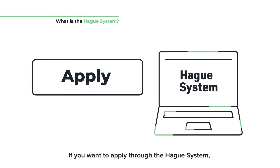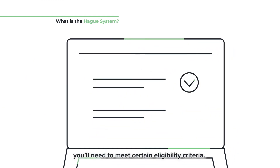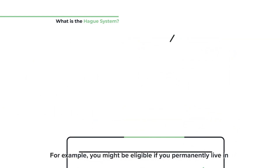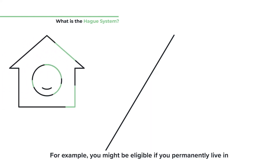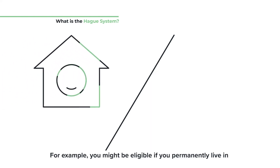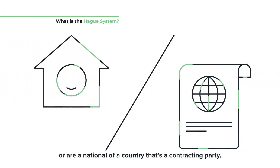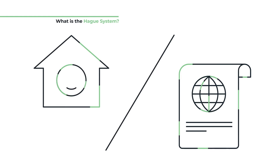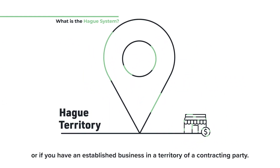If you want to apply through the Hague System, you'll need to meet certain eligibility criteria. For example, you might be eligible if you permanently live in or are a national of a country that's a contracting party, or if you have an established business in a territory of a contracting party.